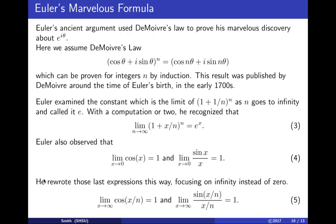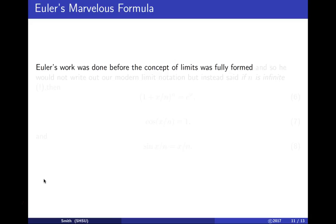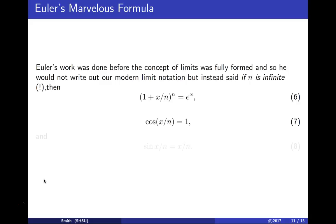Euler combined these limits with the exponential limit. This work predates formal limit notation, so Euler said 'if n is infinite' instead of using limits. When n is infinite, (1 + x/n)^n = e^x. Since sin(x/n)/(x/n) → 1, Euler treated sin(x/n) = x/n.